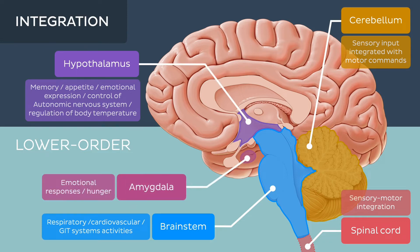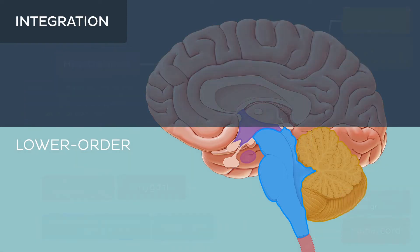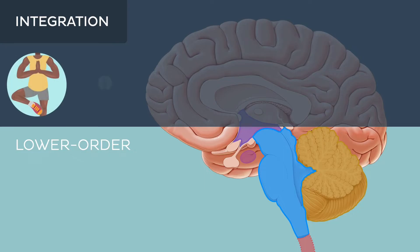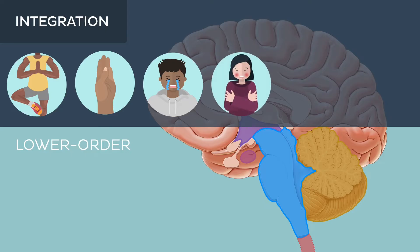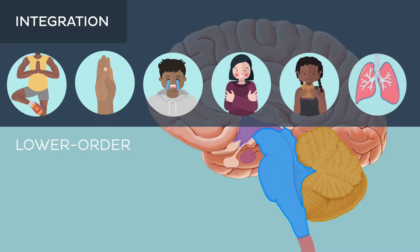These processes handle subconscious activities such as maintaining balance, coordinating movement, and basic emotional response, as well as regulating fundamental bodily functions like temperature, hunger, and breathing.